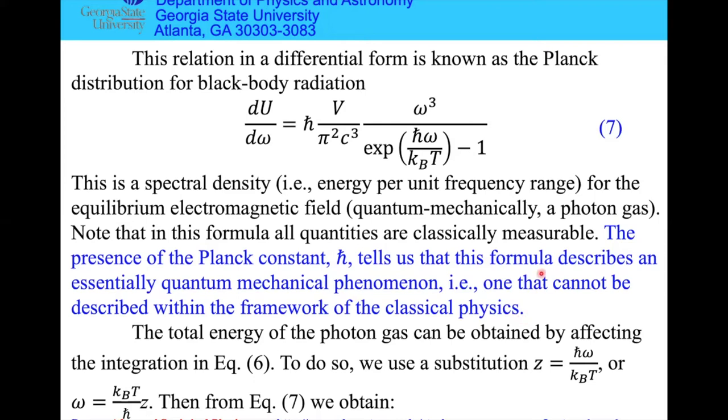This statement in blue: because of the presence of Planck constant, this is an essentially quantum mechanical phenomenon. The moment it was derived was the dawn of quantum physics. Everything else was based on this idea. By the way, from this formula, comparing experimental data, Planck found the value of ℏ basically precisely enough to use it today.